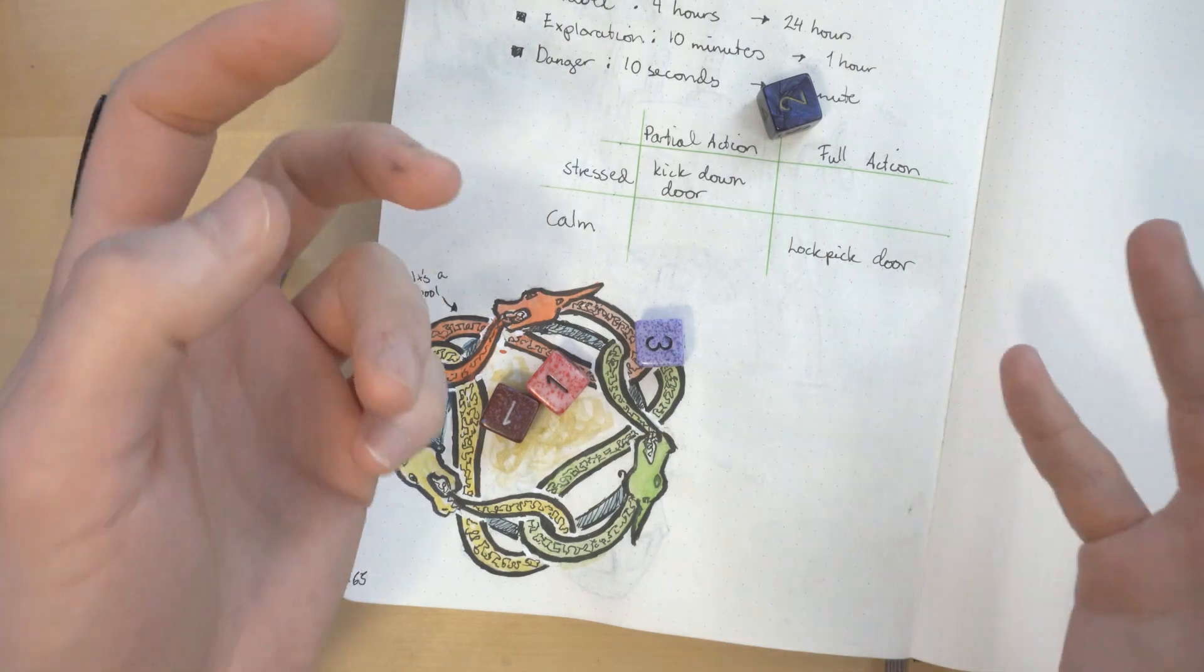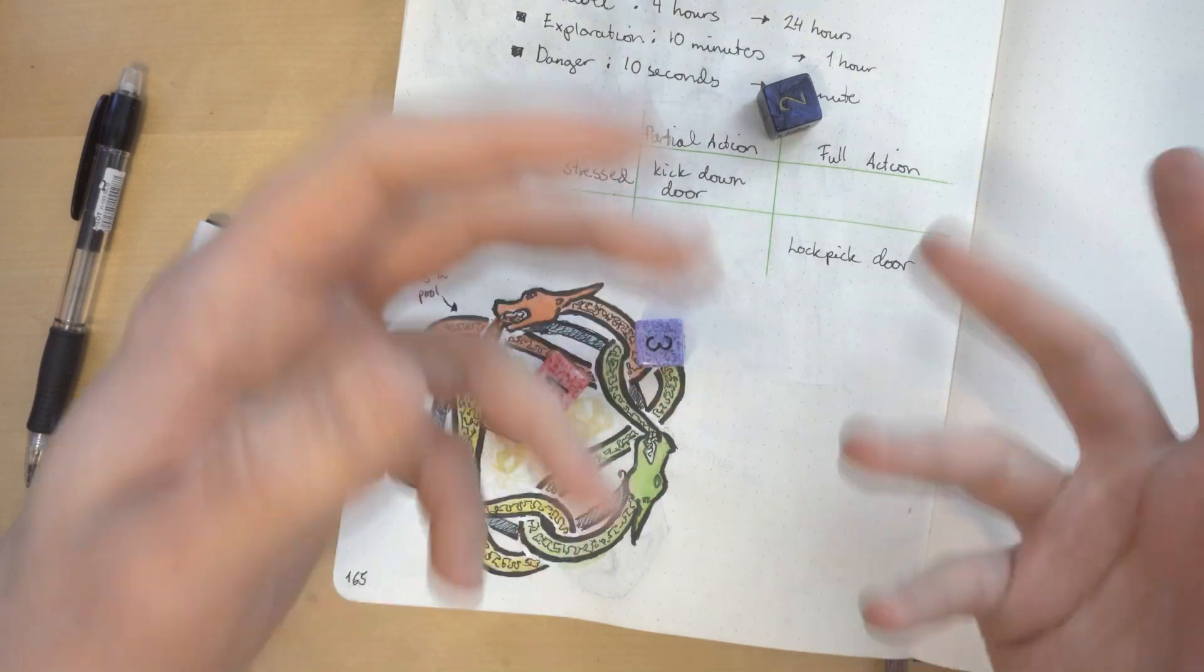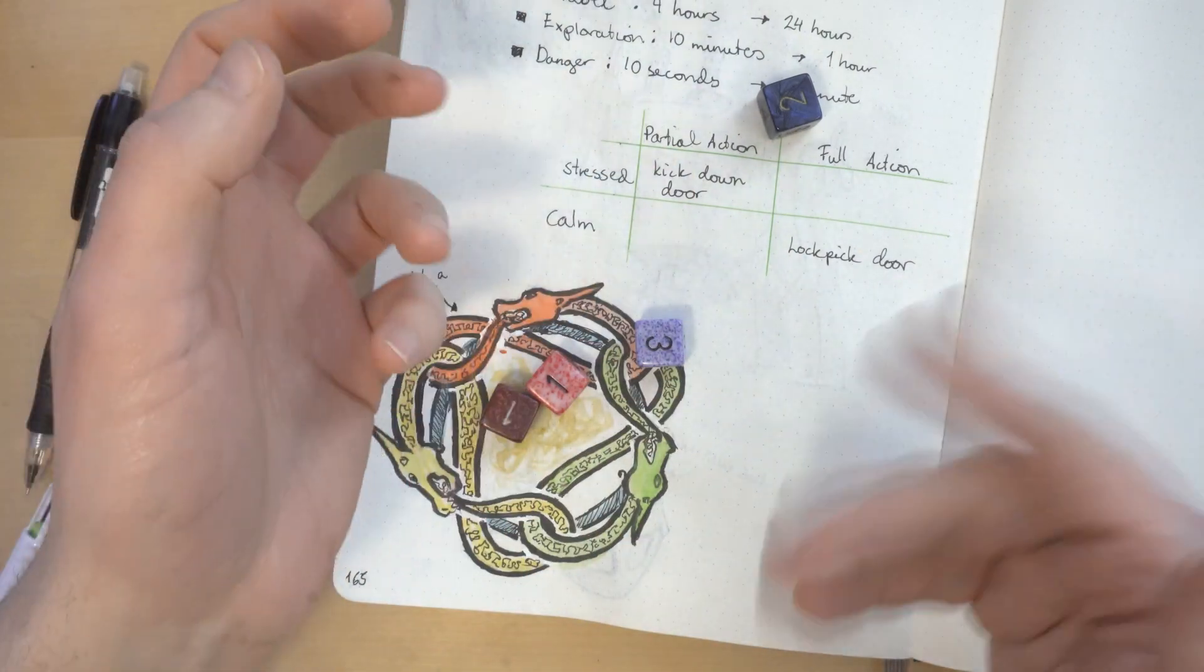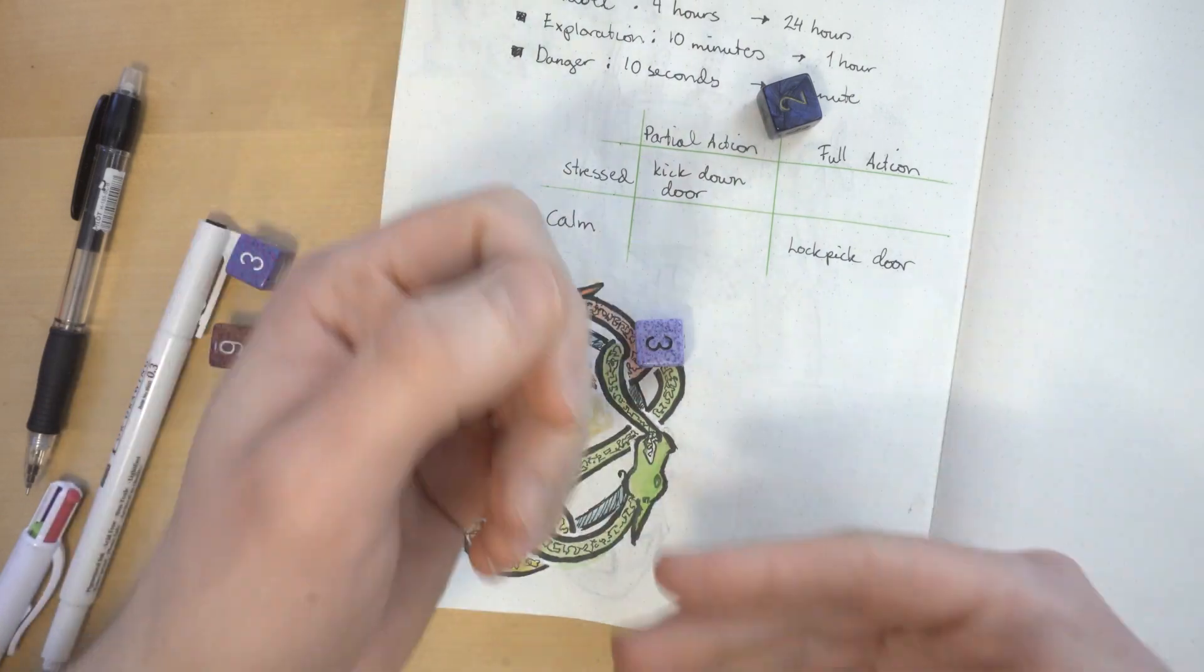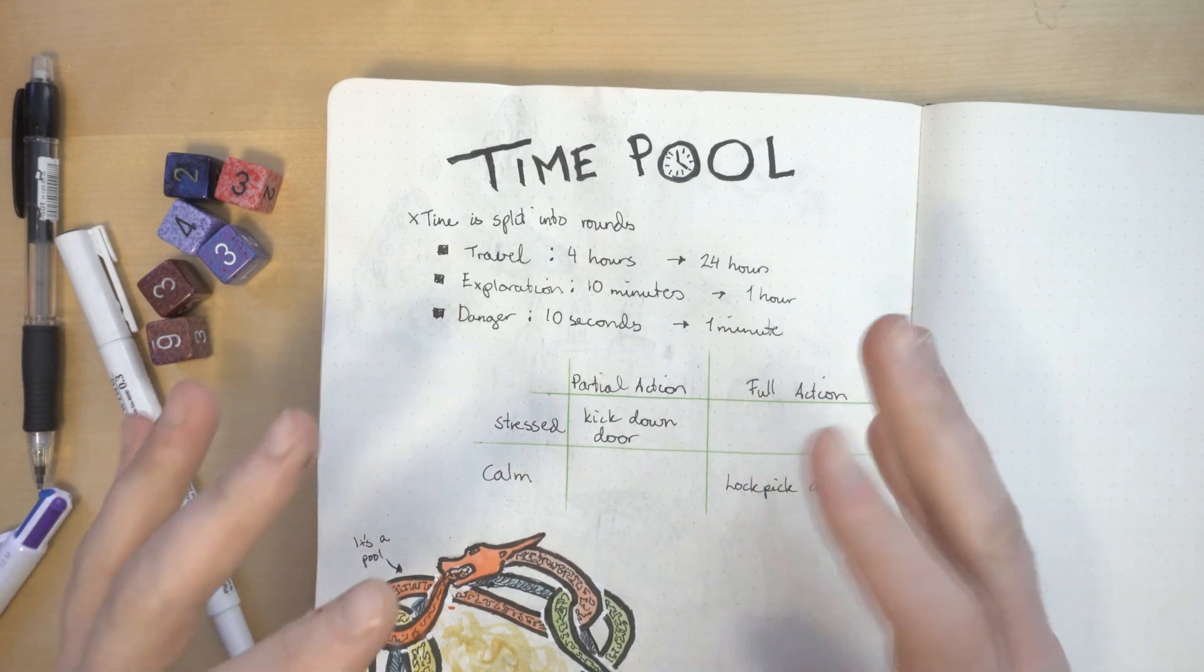If you're curious about all the details, you can check my itch.io page where I've uploaded the draft. I think that as it's written now, it's system agnostic, so you can easily adapt it to your own game if you want to try it.